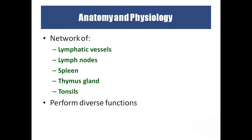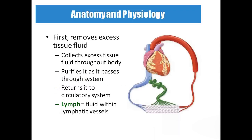Coming to anatomy and physiology again: lymphatic vessels, lymph nodes, spleen, thymus, and tonsils — each function is different from the others. First, the lymphatic system removes the excess tissue fluid collected throughout the body and returns it to the circulatory system. Lymph is the fluid present in the lymphatic system.